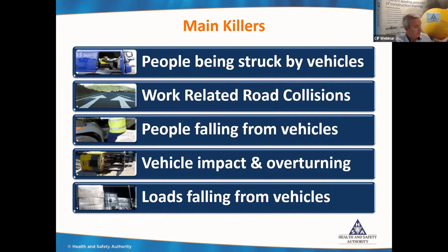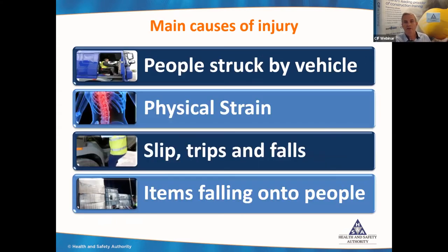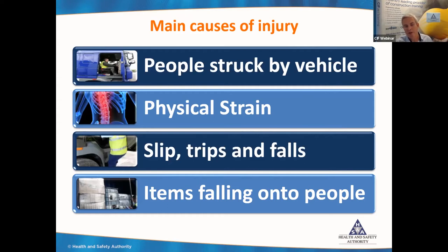In terms of injuries, people being struck by vehicles is the highest — and they're probably fortunate to escape with an injury rather than be killed, because when you get struck by a vehicle it tends to be very serious. The second is physical strain — people getting injured working associated with vehicles, maybe moving materials. The third is slips, trips and falls — people slipping or falling from vehicles. We saw that contributed to fatal accidents. And then items falling onto people off vehicles — that's probably related to load securing, which we'll discuss.